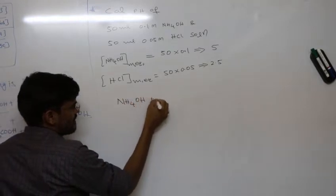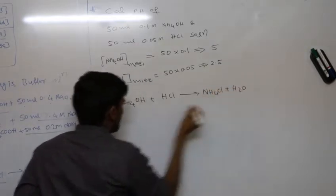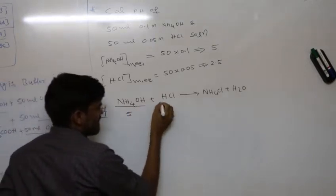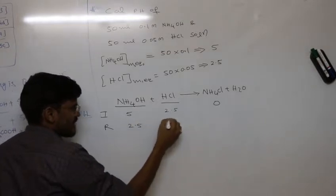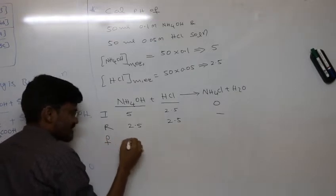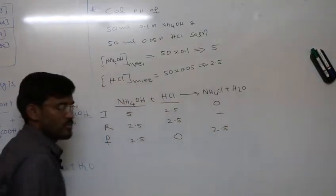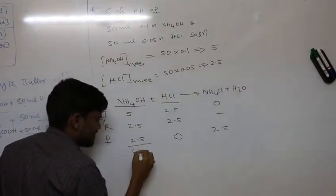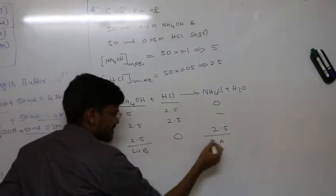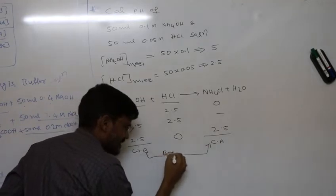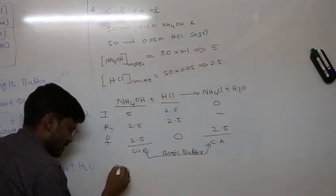The reaction is: ammonium hydroxide + HCl → ammonium chloride + H₂O. Initially: NH₄OH = 5, HCl = 2.5, NH₄Cl = 0. They react in 1:1 ratio, so 2.5 milliequivalents react. Final amounts: NH₄OH = 2.5 remaining, HCl = 0, NH₄Cl = 2.5 formed. We have weak base remaining and its conjugated acid pair — this is a basic buffer solution.